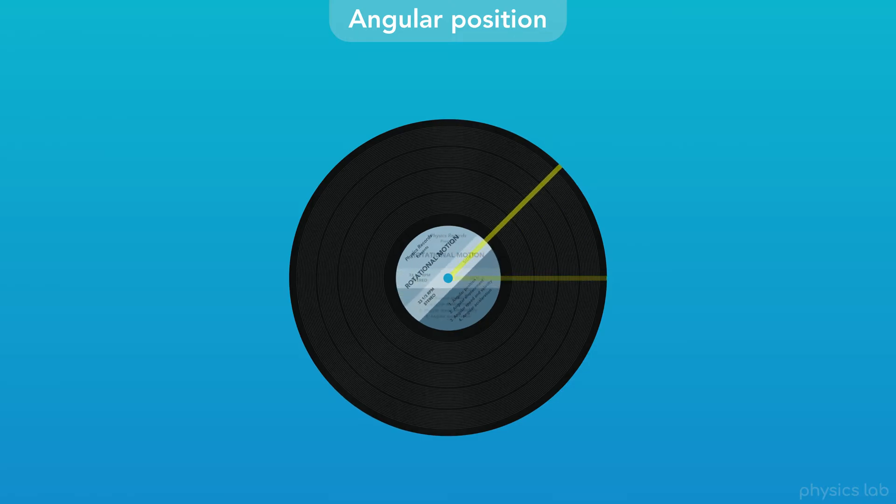What's the difference between these two positions? Well, we can see that the record and the line rotated. And there's an angle between the line at the first position and the line at the second position. In this case, the angle between these two lines is 45 degrees.